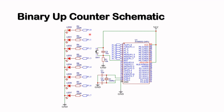The eight LEDs are connected to port 1, from P1.0 all the way down to P1.7, with all cathodes tied together and connected to ground. This is the schematic of the binary up counter.